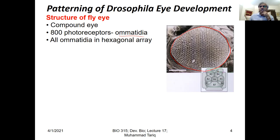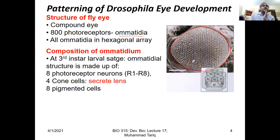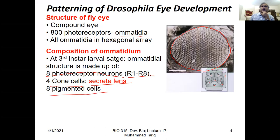Each ommatidium comprises eight cells: R1, R2, R3, R4, R5, R6, R7, and R8, plus cone cells. Together they make one ommatidium. The ommatidium is made up of eight photoreceptor neurons R1 to R8, four cone cells that secrete the lens, and eight pigmented cells. At the third instar larval stages, this patterning of ommatidia takes place.